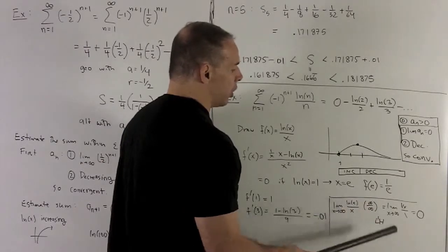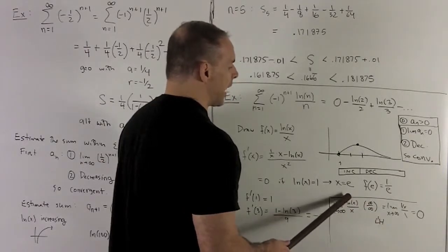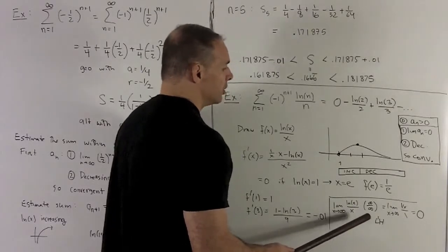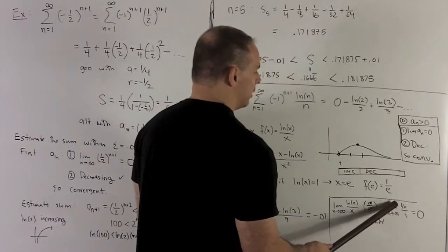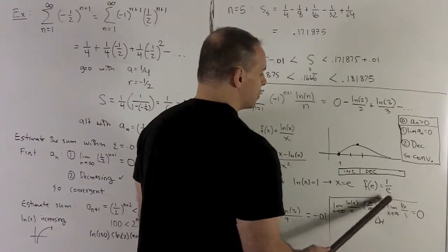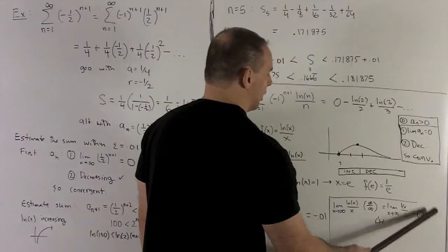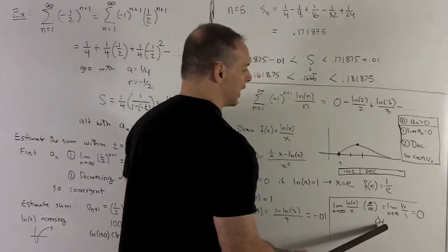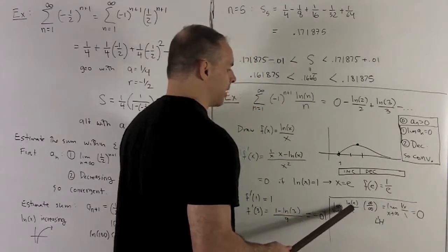So, I can use L'Hopital's rule. Derivative of the top is 1 over x. Derivative of the bottom is 1. So, we're really taking the limit of x going to infinity of 1 over x over 1. That limit is just going to go to 0. Since that limit makes sense, L'Hopital's rule says that's equal to my original limit.